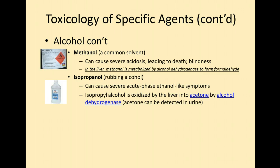Next is isopropanol — what we call rubbing alcohol. This causes acute phase ethanol-like symptoms. Sometimes we find alcoholics who may binge and try drinking isopropyl alcohol because that's all they can find. Unfortunately it's quite damaging — it's oxidized into acetone in the liver. So they actually smell like a combination of rubbing alcohol and nail polish remover. I'll never forget drawing a patient in the emergency room who drank a couple bottles of this — the smell was burning my eyes, it was so strong.